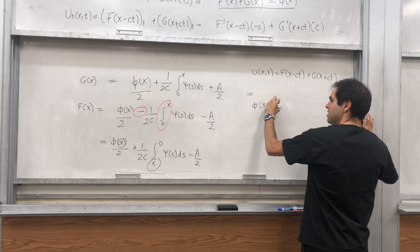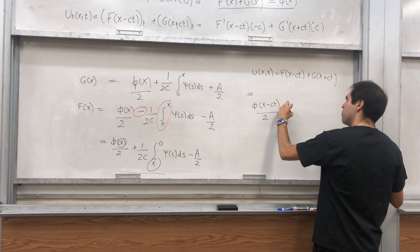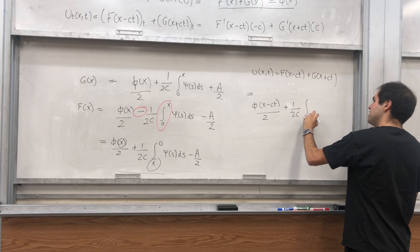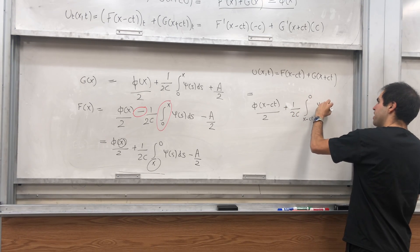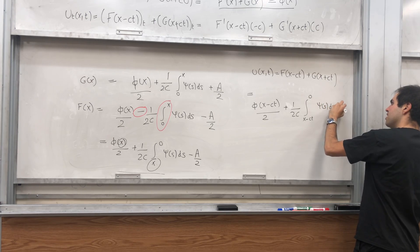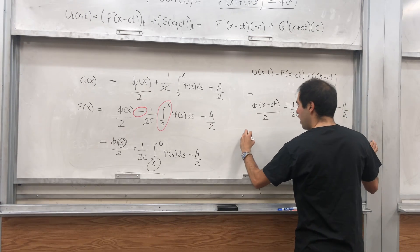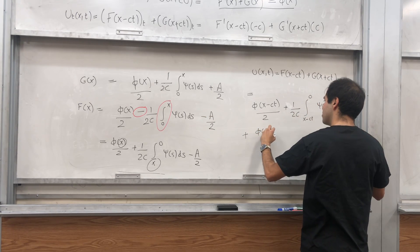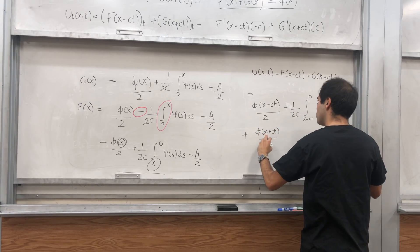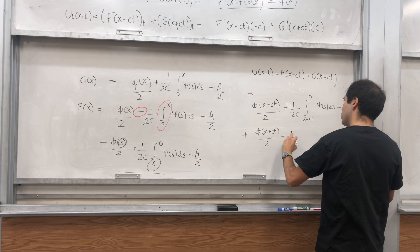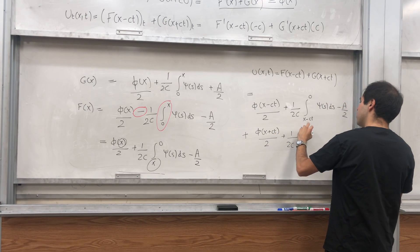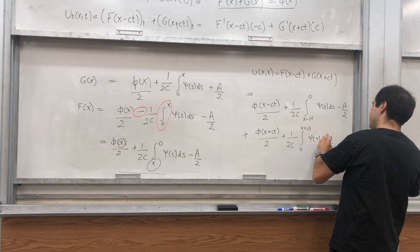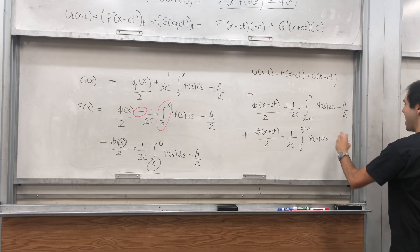So phi of x minus ct over two, plus one over two C, integral from zero to x plus ct, psi of s ds, and plus A over two.